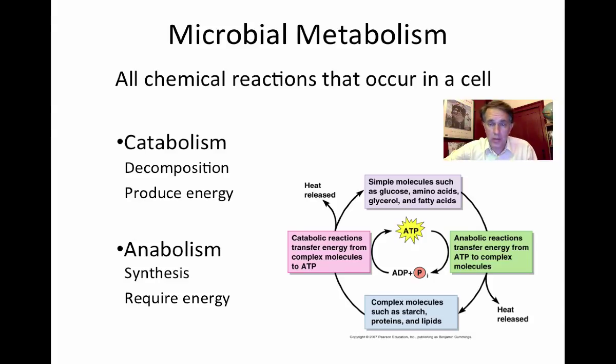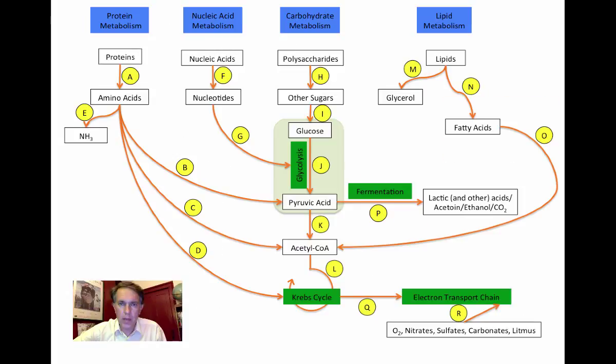So that's the big picture view. If we zoom in a little bit, we can see the metabolic pathways that we're going to be interested in in the lab. We have it broken up into four basic categories here: protein metabolism, nucleic acid metabolism, carbohydrate metabolism, and lipid metabolism.